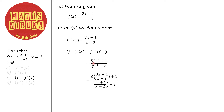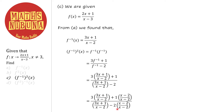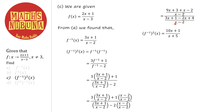Substituting f⁻¹(x) = (3x+1)/(x-2) into f⁻¹: numerator becomes 3·(3x+1)/(x-2) + 1 and denominator becomes (3x+1)/(x-2) - 2. Making denominators the same with (x-2): numerator gives 9x+3+(x-2) = 10x+1, and denominator gives 3x+1-2(x-2) = x+5. Cancelling (x-2), we get (f⁻¹)²(x) = (10x+1)/(x+5). Remember, this is not squaring — f⁻¹ comes twice.